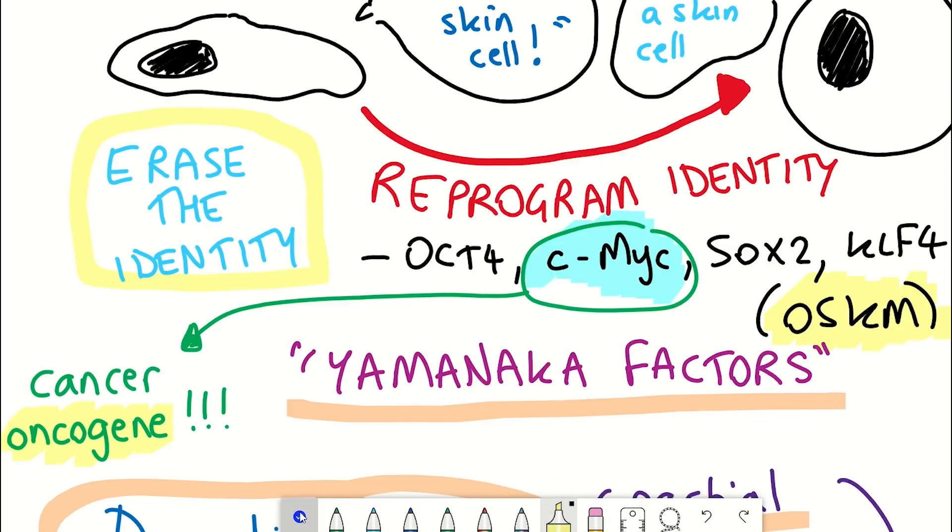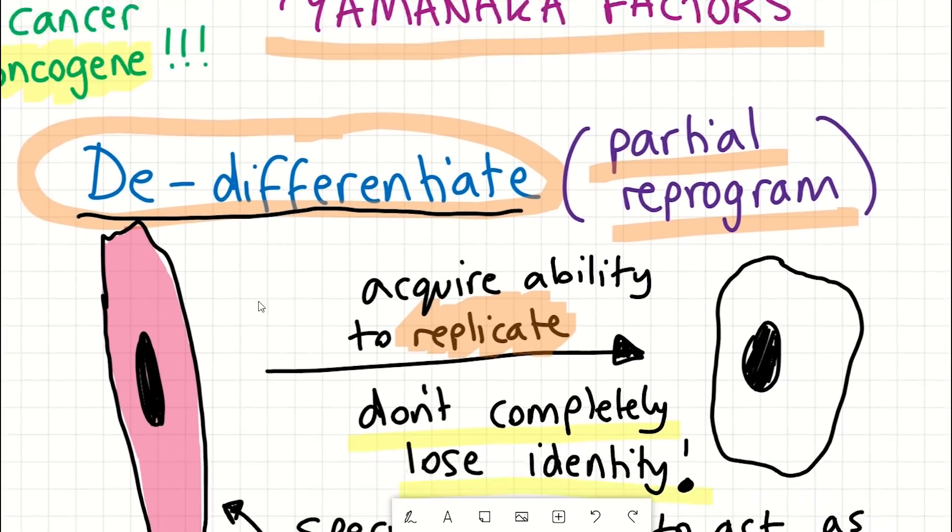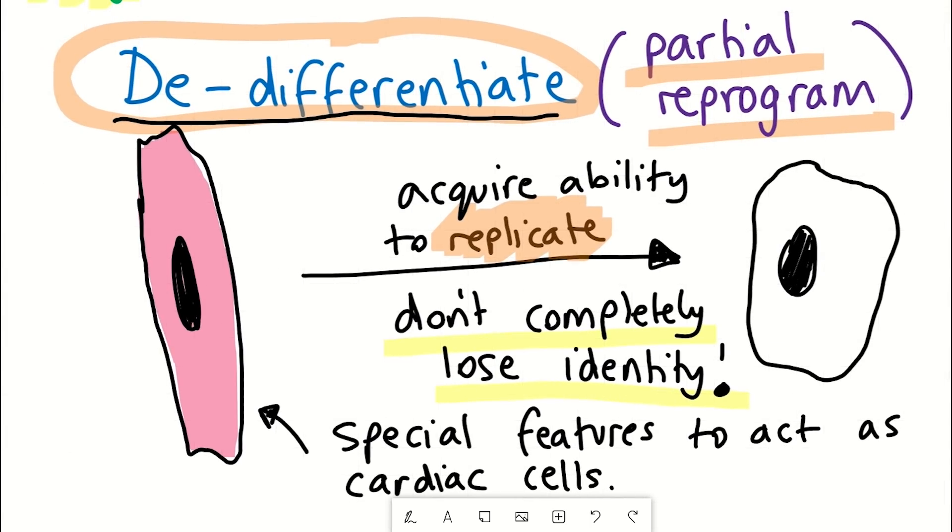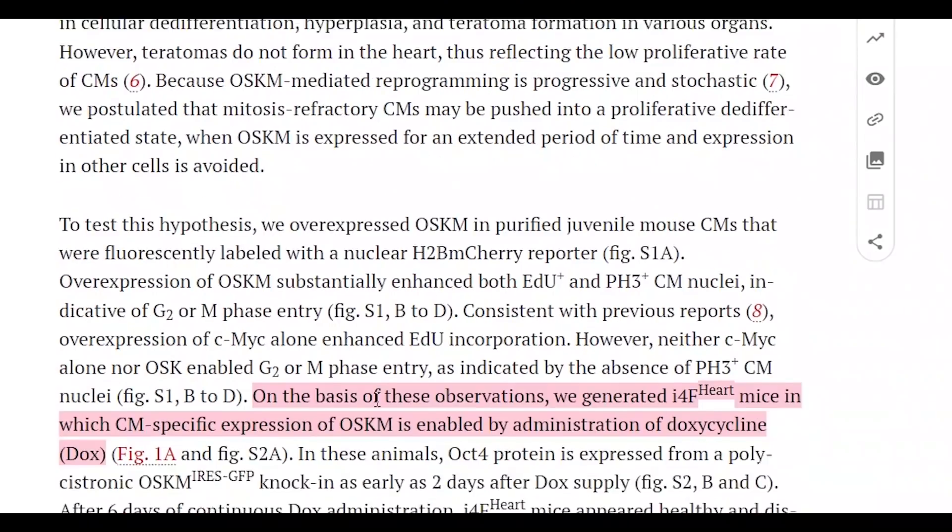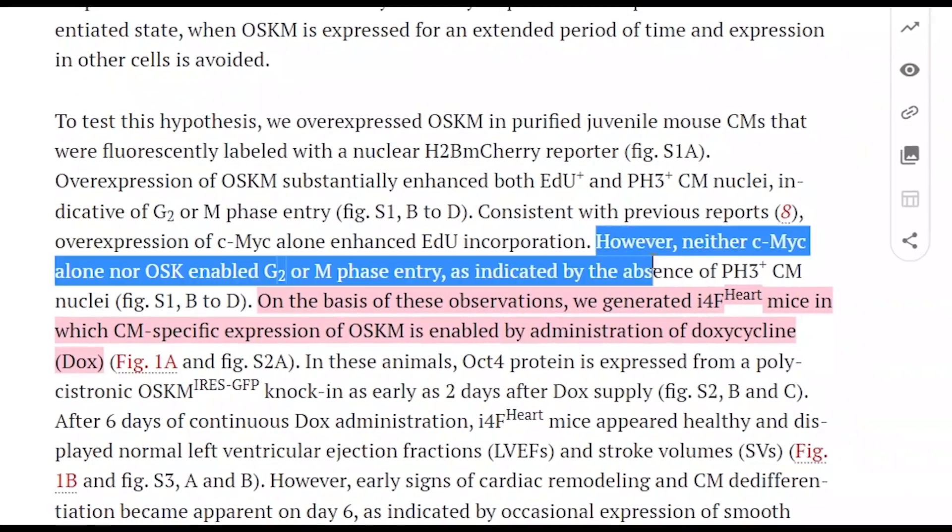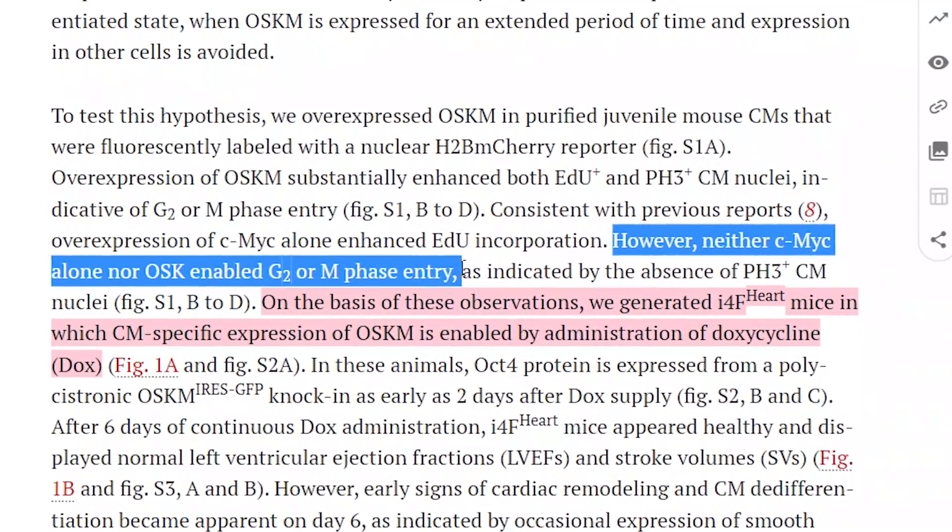And before going straight to in vivo with the mice, they first tested whether they could get cell culture dishes of the cardiomyocytes to grow. However, neither MYC alone nor OSK was able to coerce these cardiomyocytes to replicate. So they had to stick with OSKM.